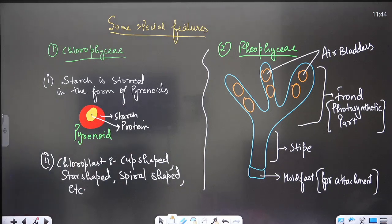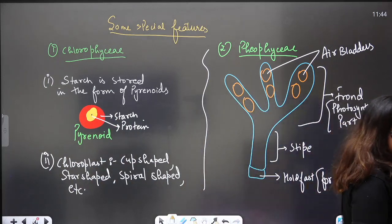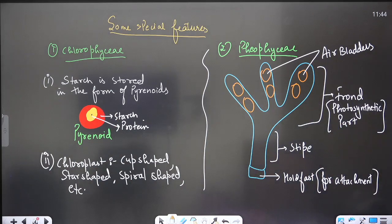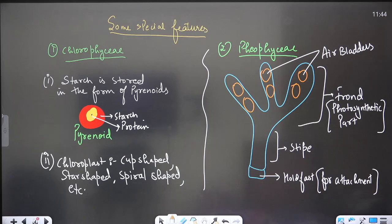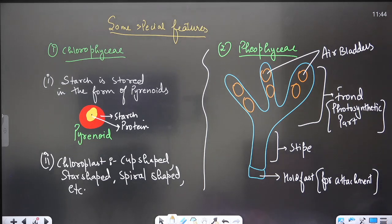They can ask you: the body of which group of algae is divided into holdfast, stipe, and frond? You will choose Phaeophyceae. The members of Phaeophyceae have their body divided into three parts: holdfast, stipe, and frond. These are some special features of algae that you need to understand. Let me know if you have any doubt in the comment section.